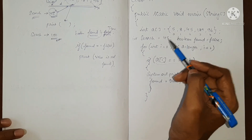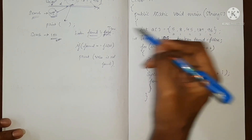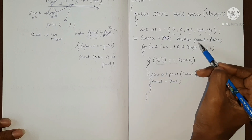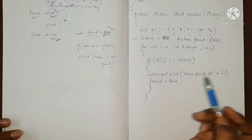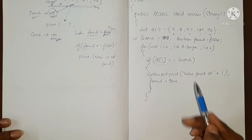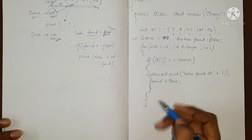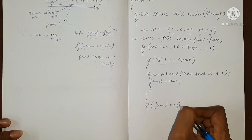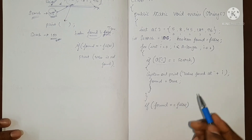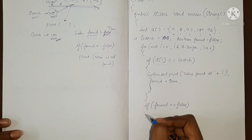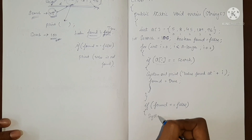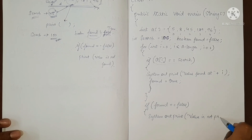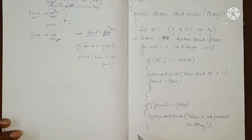Now, what if we were searching for value 100? As I explained, if we are searching for 100, we are never going to find it in this array. So the variable found will always remain false because we are never going to enter the if block. Outside the for loop, we say: if found equals false, it means we didn't find the value inside the array, so we print that the value is not present. That's it.